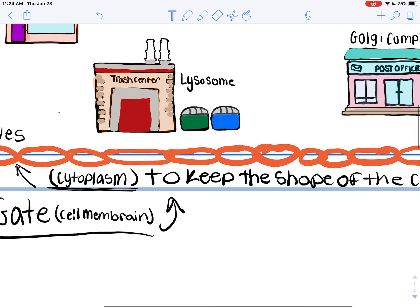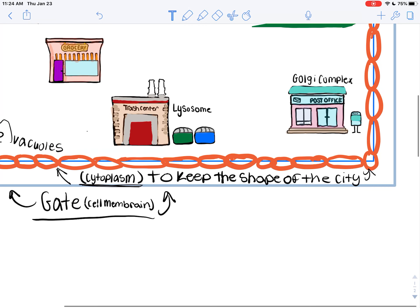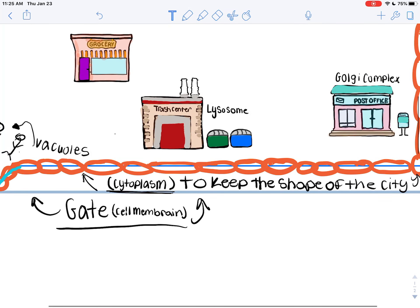Then we have the cytoplasm. It keeps the shape of the city, so I did an orange little barrier to keep the shape and keep it protected.